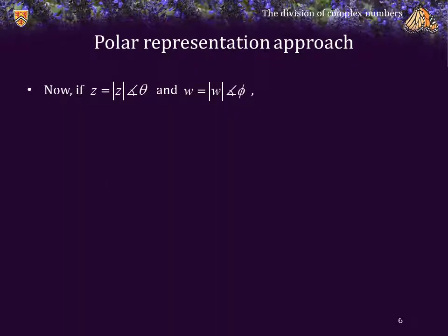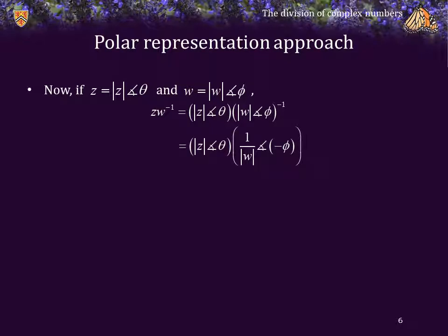Let's look at the polar representation approach. If z is equal to its magnitude phase theta and w is its magnitude phase phi, then the product of z and w-inverse is the expression on the right-hand side. The inverse of w is given by 1 over the magnitude of w phase negative phi, and the product of two numbers in polar representation is the product of the magnitudes and the sum of the angles. In this case, it's the ratio of the magnitudes phase the difference of the angles.